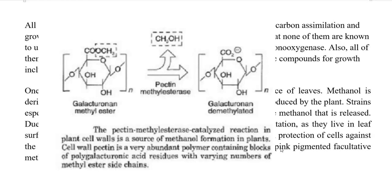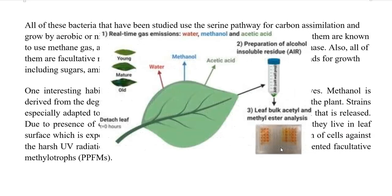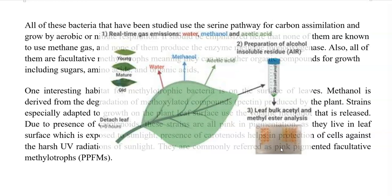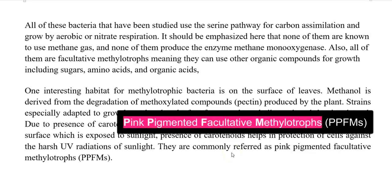One interesting habitat for methylotrophic bacteria is the surface of leaves. Methanol is derived from the degradation of methoxylated compounds from pectin produced in the plant system. Strains especially adapted to grow on the plant leaf surface use this volatile methanol released during pectin degradation. These organisms contain carotenoids that give them a pink pigmentation, which helps protect cells against harsh UV radiation from sunlight.